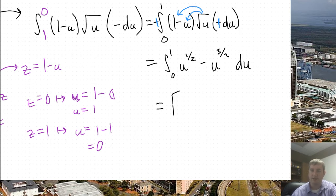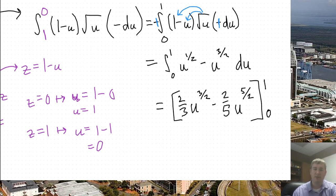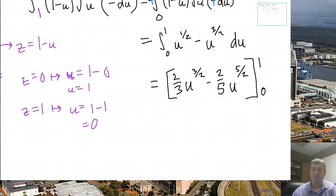All right. Now I'll integrate. I've got u to the 1/2. And that's going to become add 1 to the power, u to the 3/2. And then I've got to multiply it by, well, I'll divide by the new power, or that's the same thing as multiplying by its reciprocal, 2/3. And then do it again. u gets raised to a higher power, 5/2. Add 1 to 3/2 to get 5/2. Multiply that by its multiplicative inverse. And then I'll plug in 0 to 1.